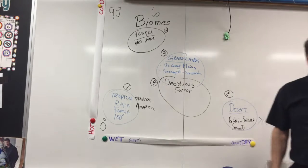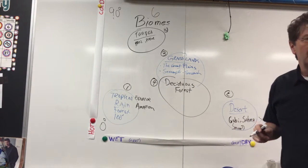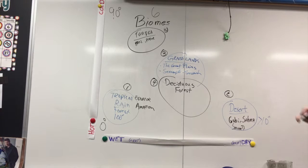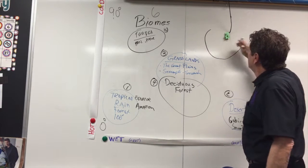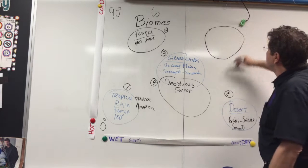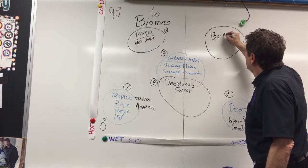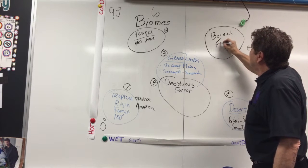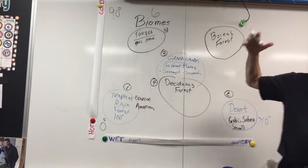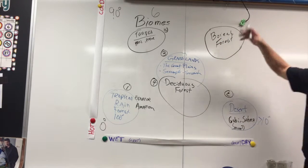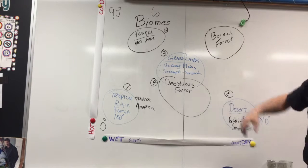That leaves us one more biome to talk about. The boreal forest. A boreal forest is a little bit drier. B-O-R-E-A-L — boreal forest. You've probably heard of boreal up north — it's way up north, where there are the northern lights. So we have these six biomes around the world.